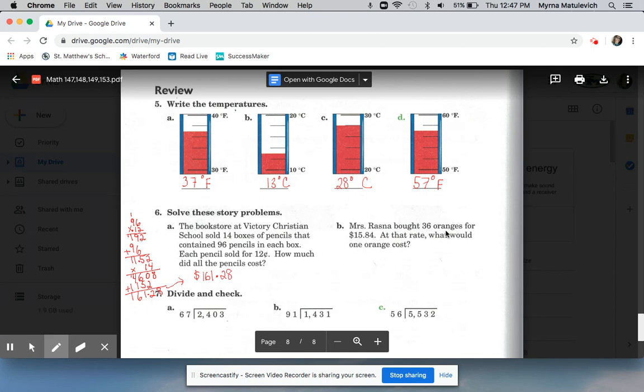Mrs. Razna bought 36 oranges for $15.84. At that rate, what would one orange cost? So if 36 oranges are $15.84, to find the cost of one orange I have to divide $15.84 by 36. Remember when you divide, bring your decimal point straight up, and I got 44 cents for one orange.